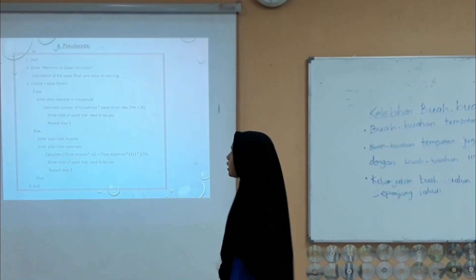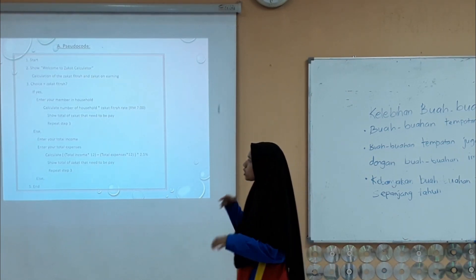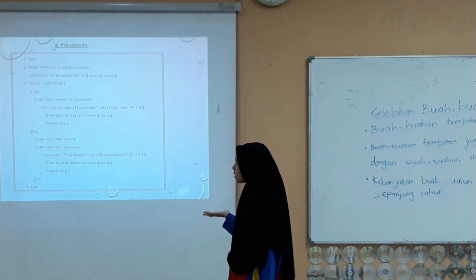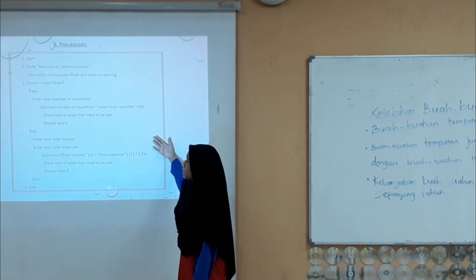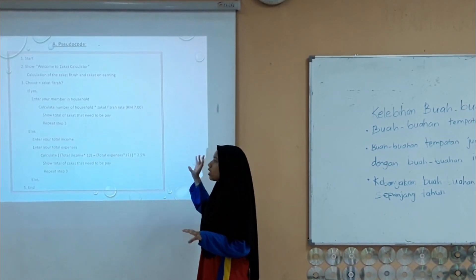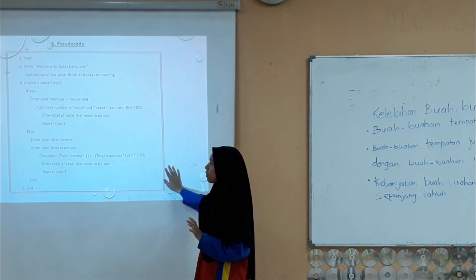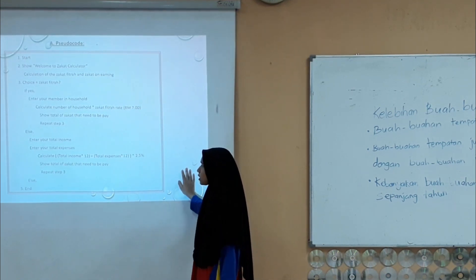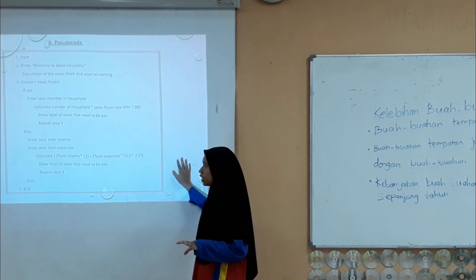Here is the pseudocode I made. Step 1: start. Step 2: show welcome to zakat calculator — calculation of zakat fitrah and zakat on earning. Step 3: if zakat fitrah, enter number of household members, then multiply by the zakat fitrah rate, show the zakat amount to be paid, and repeat step 3. If the user says no, calculate zakat on earning: enter total income, enter total expenses, calculate total income minus total expenses, multiply by 2.5%, show the zakat amount, and repeat step 3. If the user says no to every question, the program ends.